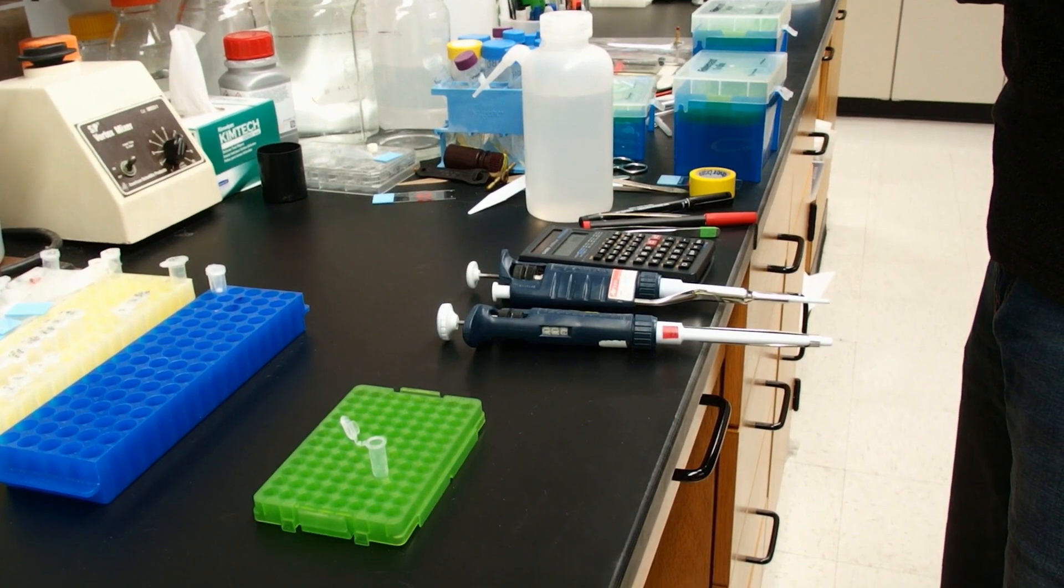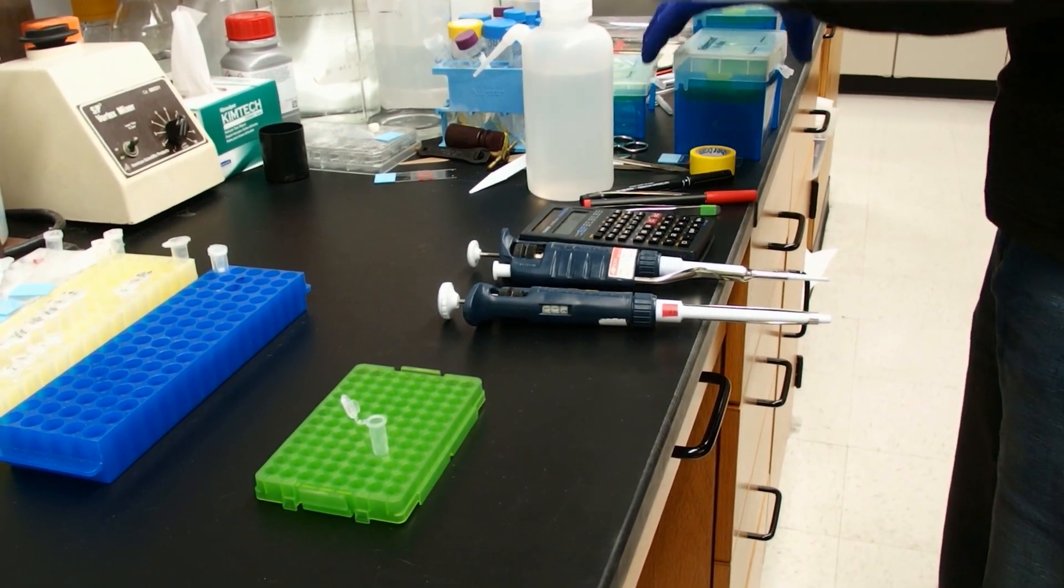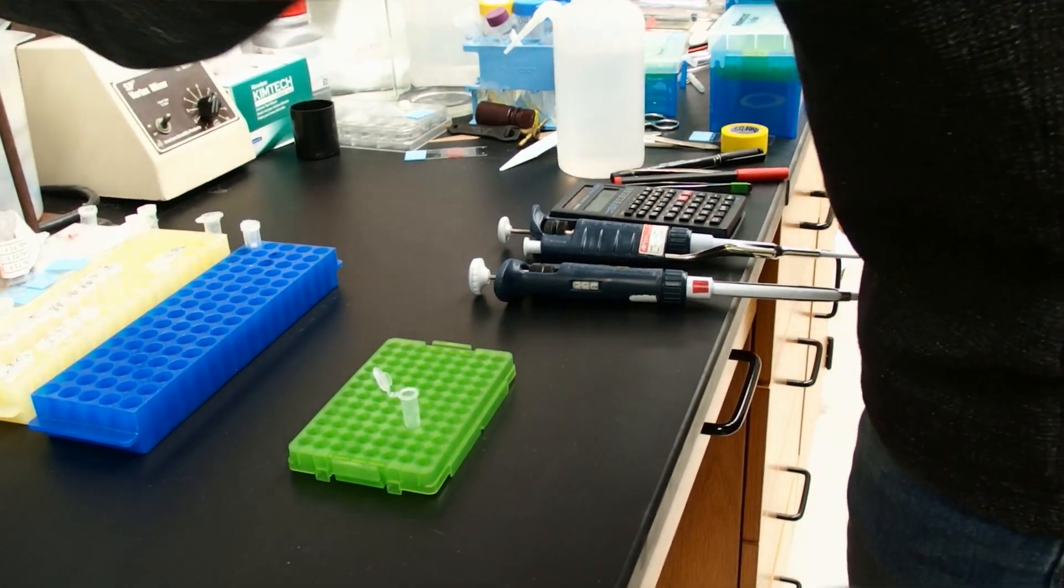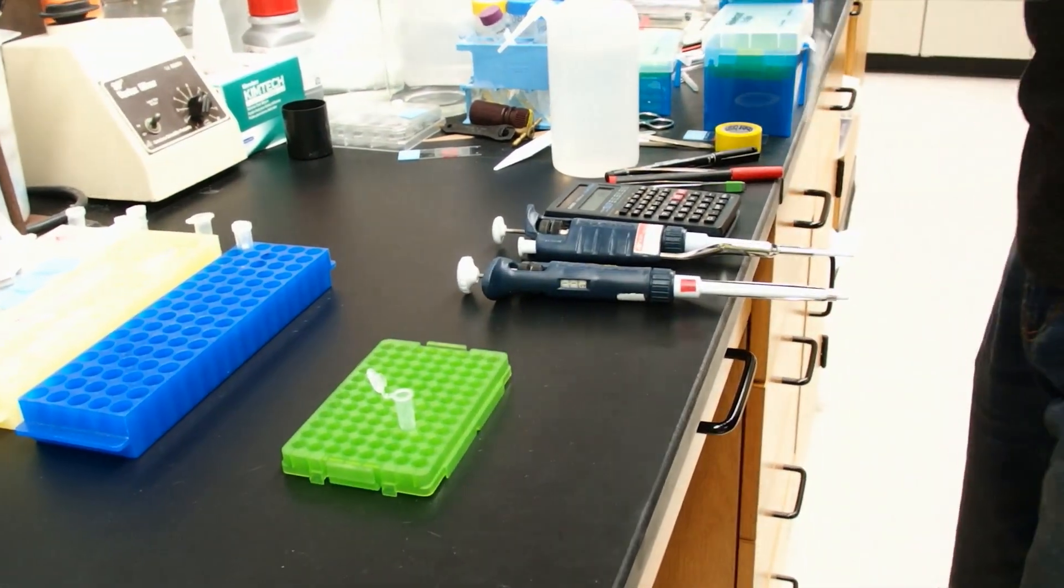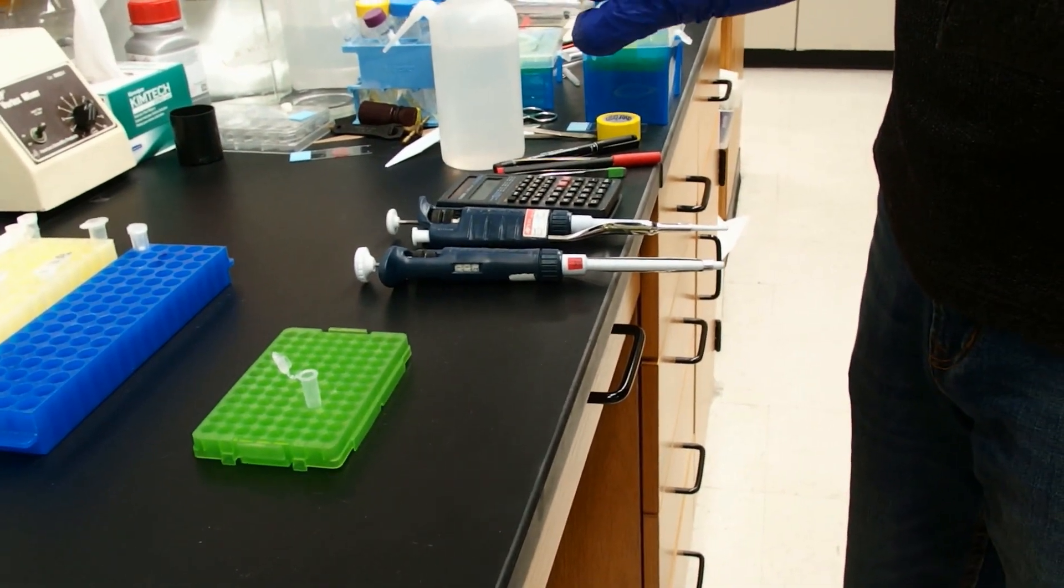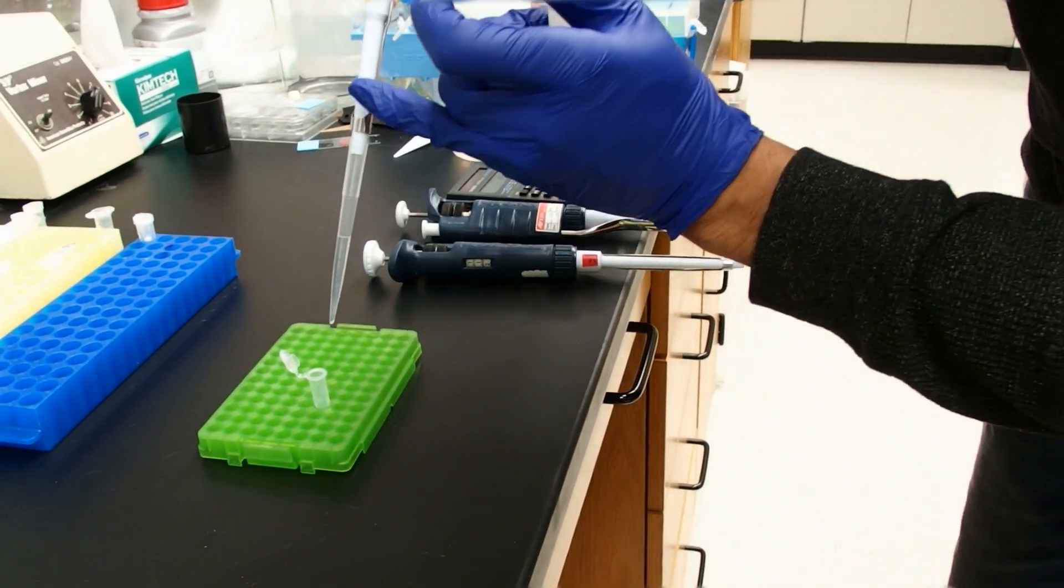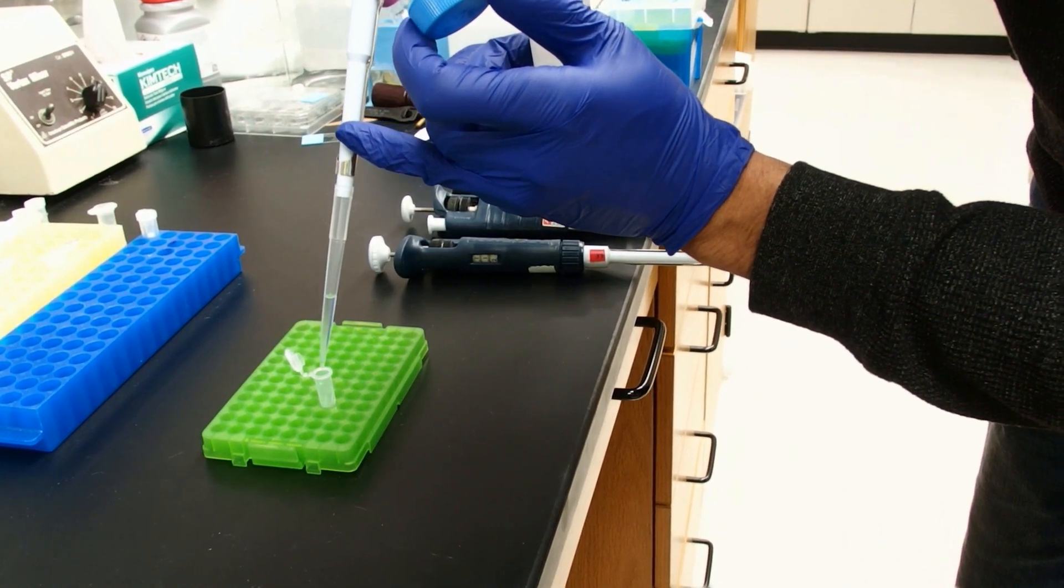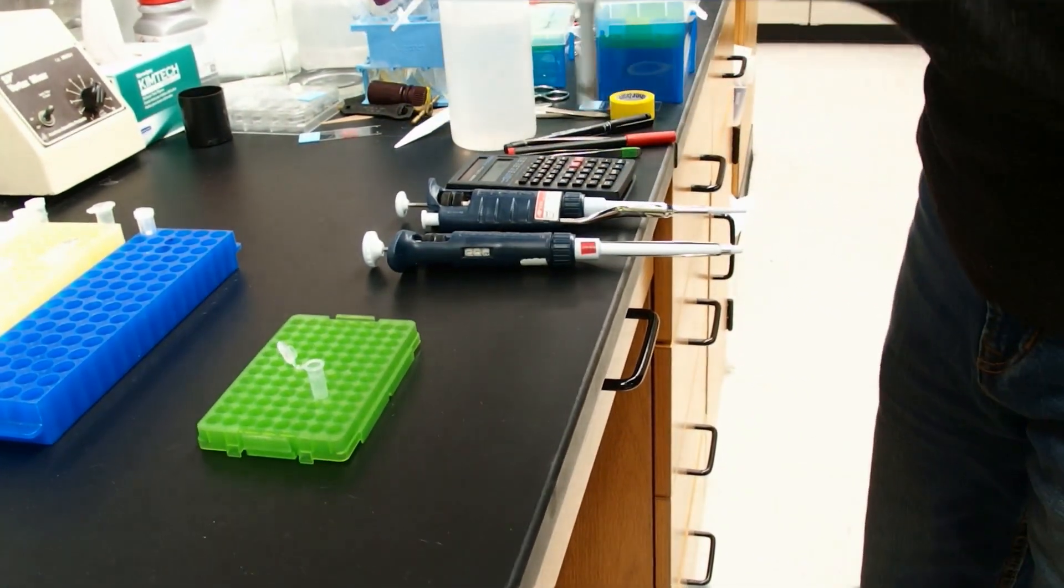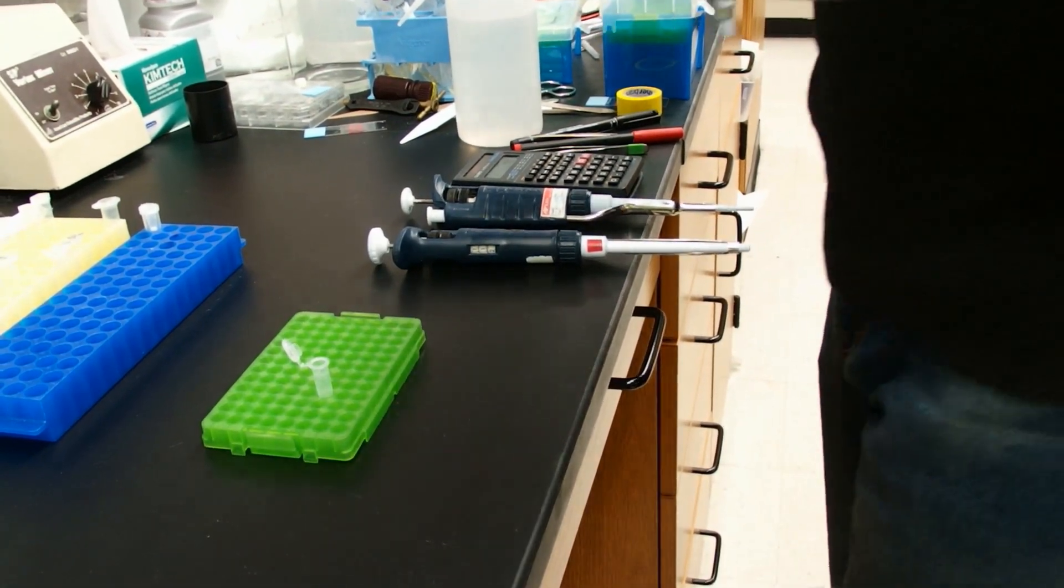And we'll wash that pellet real quick with 70% ethanol. It's desirable to wash with as much ethanol as will fit in the tube. The tube is a 500 microliter tube, so I'm going to put 500 microliters there.